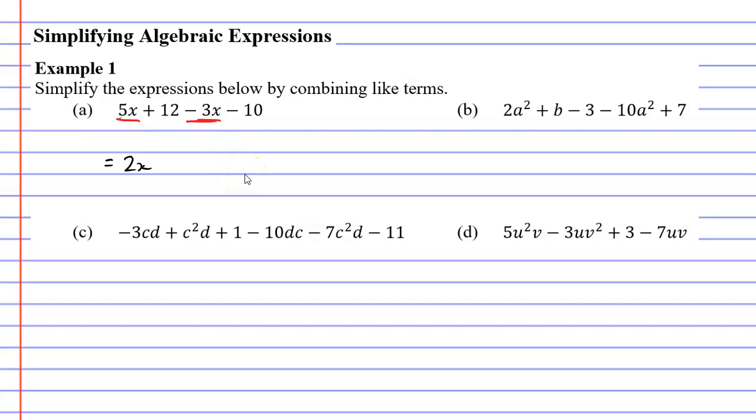We have another couple of terms to look at. We've got 12 and let's take note that that's a positive 12 and then we've got minus 10. And these are referred to as like terms because they both don't have any pronumerals. So you can technically say that they have the same set of pronumerals. They don't have any. And 12 minus 10 gives us 2 or positive 2. So we're going to write plus 2 to the right here. And this gives us our simplified expression of 2x plus 2.